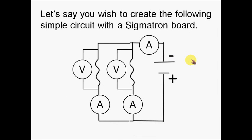Now let's say we wish to create the following simple circuit with a Sigmatron board. What you see here is a parallel circuit with two branches and voltmeters attached in parallel and three ammeters attached in series at different spots.